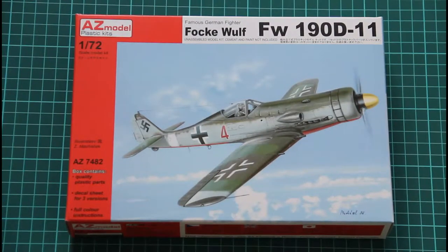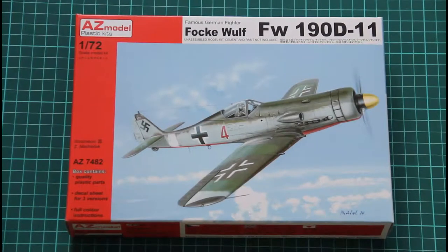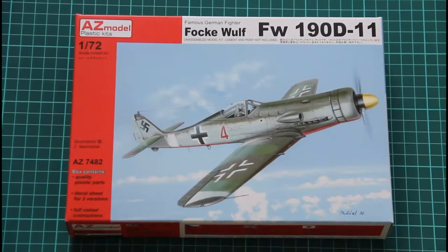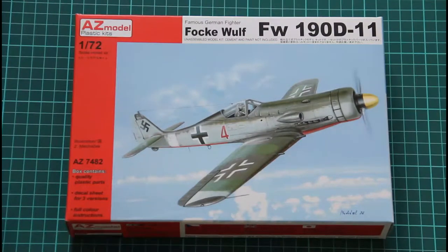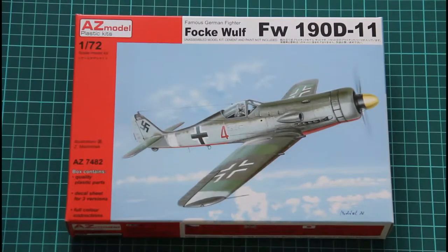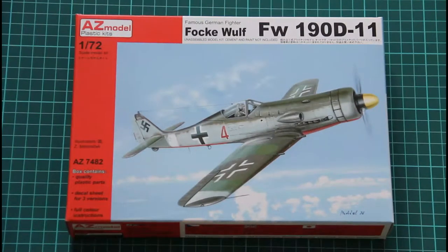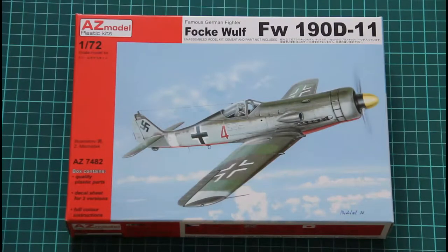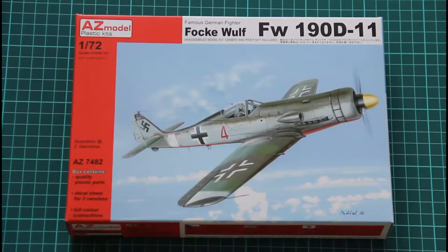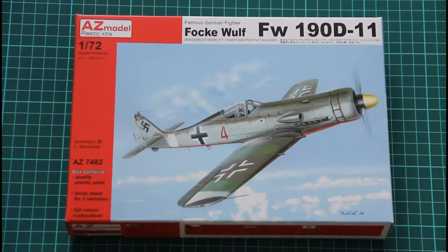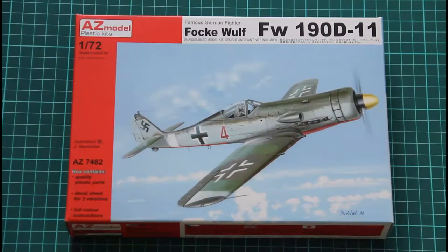Basically this model can be described as an improved version of the RV model kit, and we will see some improvements during this review. It's supplied in this traditionally designed AZ model styled box. On the top we have this nice painting of the D11. As you can see, this kit version is D11, though there is also a release with D13. The model itself is made in the 72nd scale, so it should be nice and interesting to check.